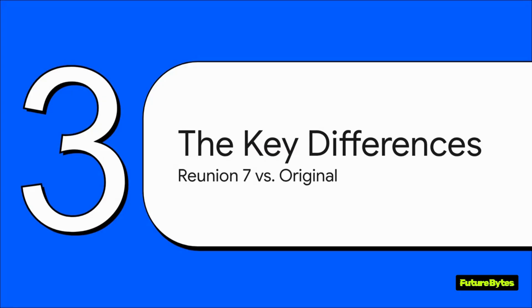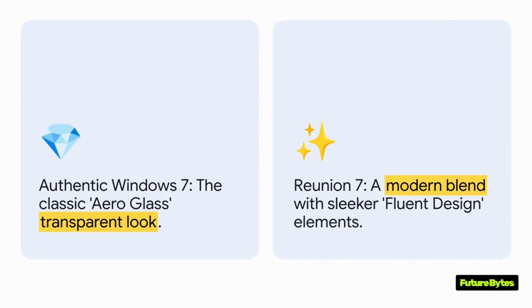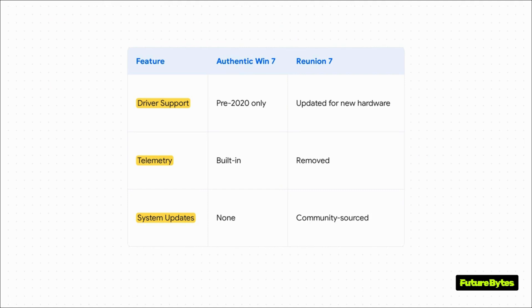So what did these digital mechanics actually change? Let's pop the hood and look at the key differences between the original Windows 7 and Reunion 7. First up, the look and feel. Reunion 7 doesn't just copy that classic aero glass transparency we all remember — it actually updates it, blending in some of the sleeker, more modern design ideas from Microsoft's current Fluent Design System. It ends up feeling familiar and fresh all at the same time. The original Windows 7 really struggles with any hardware built after 2020, but Reunion 7 updates the drivers so it can actually run on newer computers.